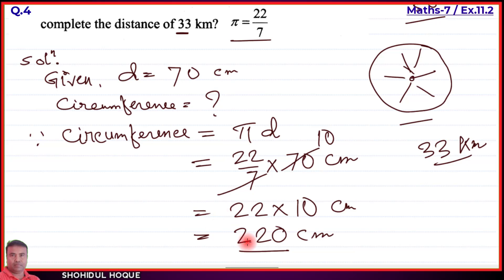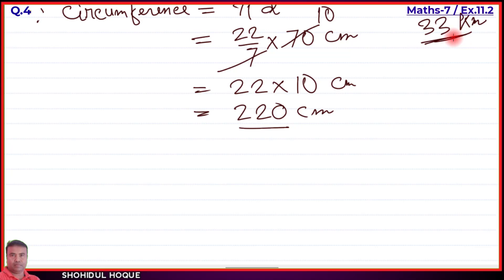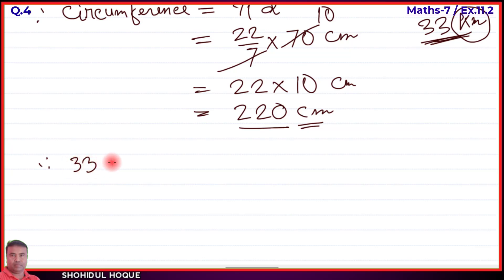Now the total distance to cover is 33 kilometer. We need to find how many times the wheel will rotate to cover 33 kilometer. The circumference is in centimeter, so we need to convert 33 kilometer to centimeter. 33 kilometer equals 33 into 1000 meter, and 1 meter equals 100 centimeter.